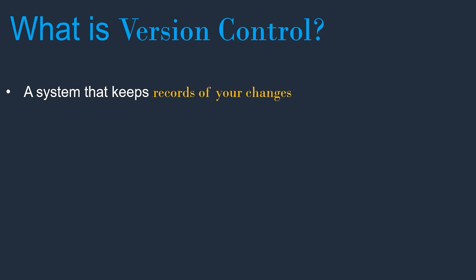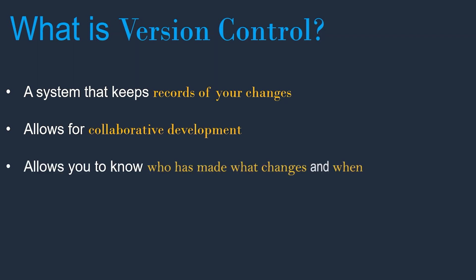It records what changes we have done to our code and when. It allows for collaborative development — if multiple people are working on the same project, code sharing is easy with a version control system. It also allows you to know who made what changes and when. And it allows you to revert any changes — if changes done today are not working, you can easily go back to yesterday's code. These are the major advantages of using a version control system.